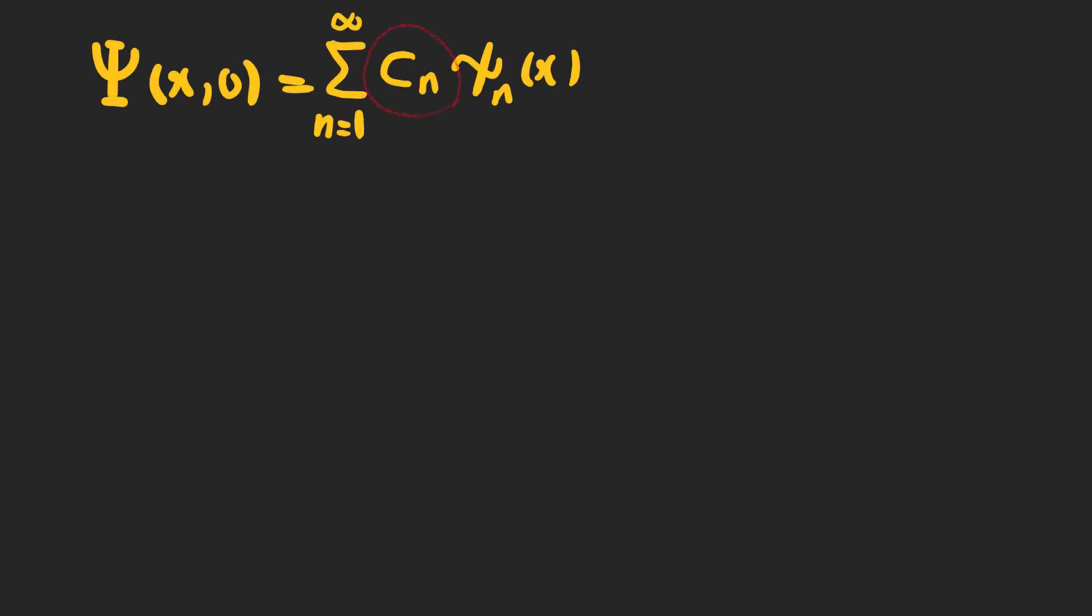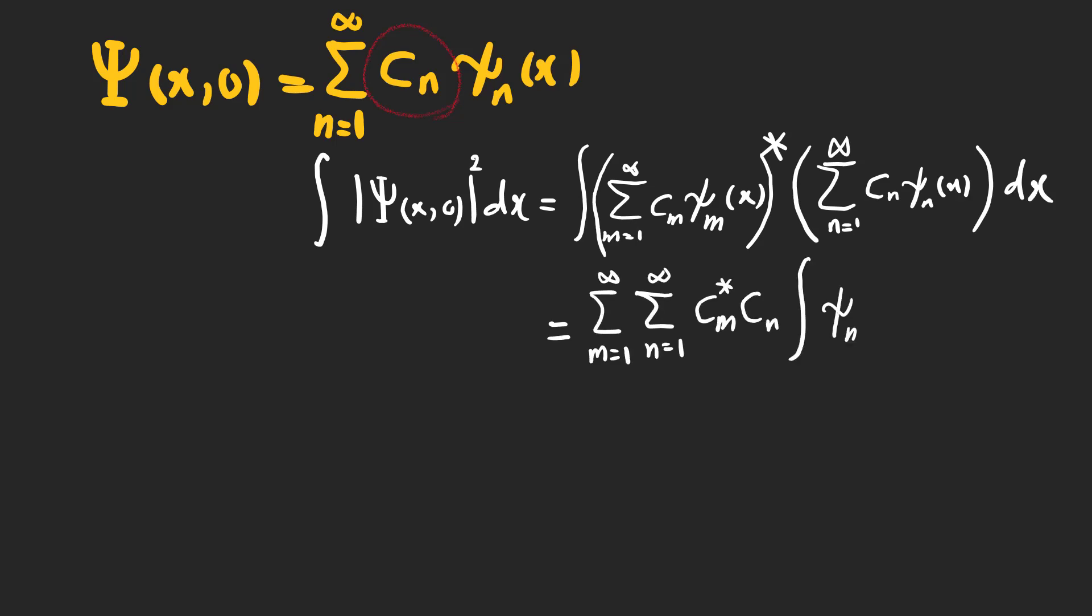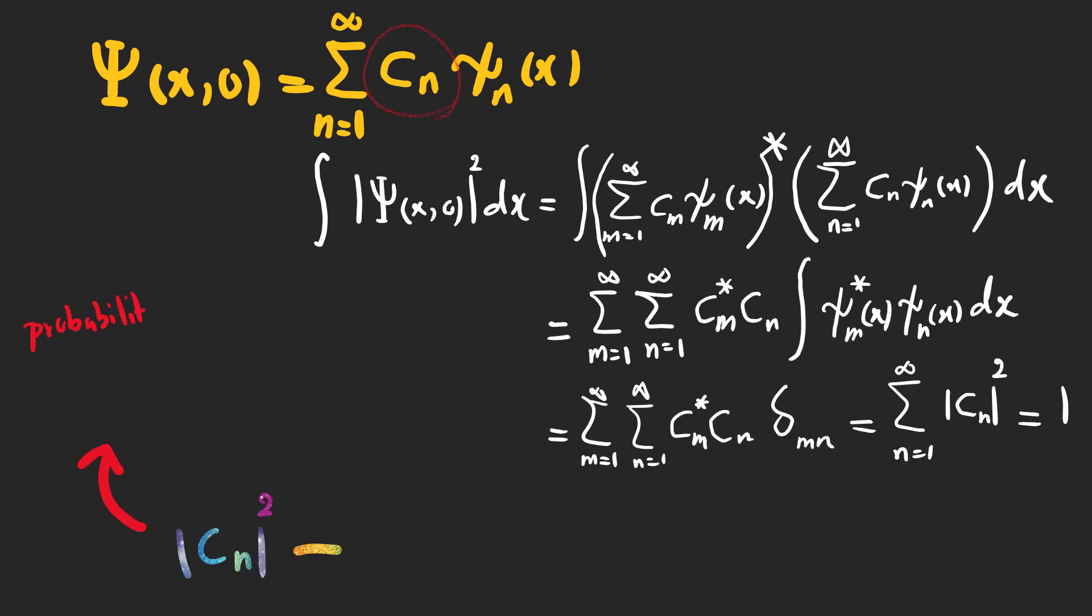In the last section of this video, let's talk about these coefficients. They are independent of time so we can use the initial wave function. We start with the normalization condition and find out that the square of the coefficients sum to 1. They are the probability that a measurement yields a specific wave function psi_n of x.